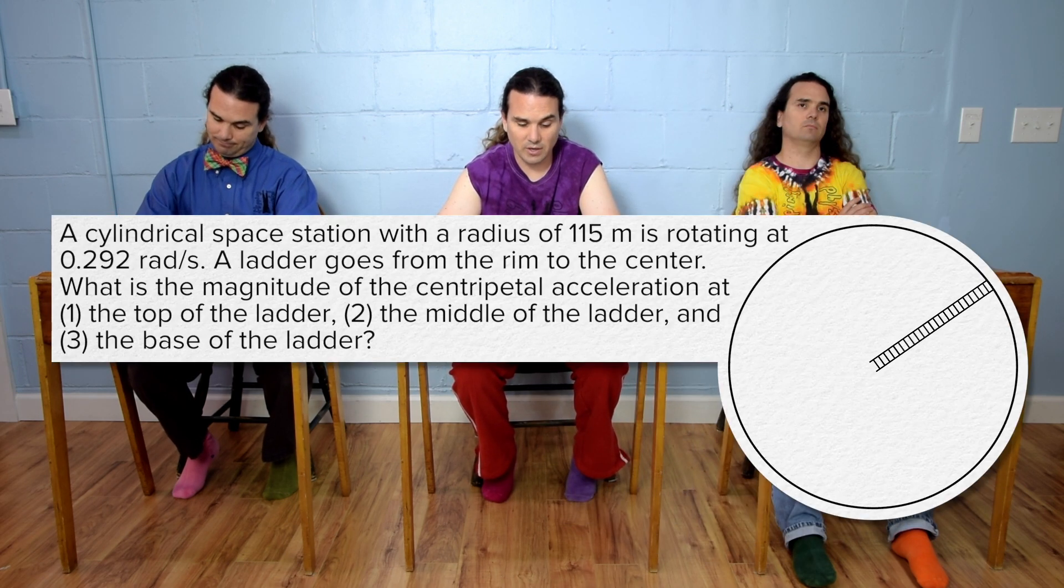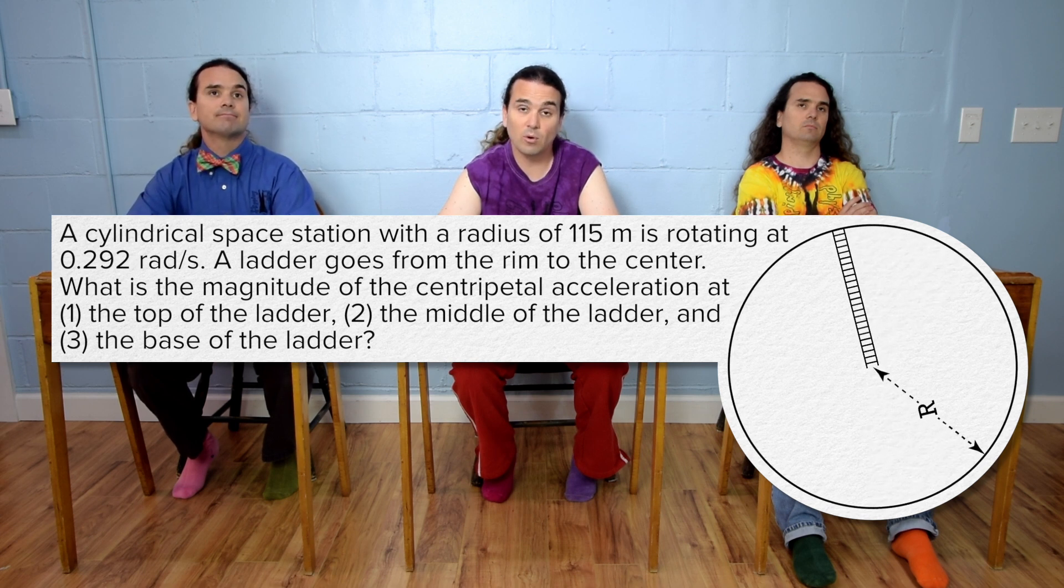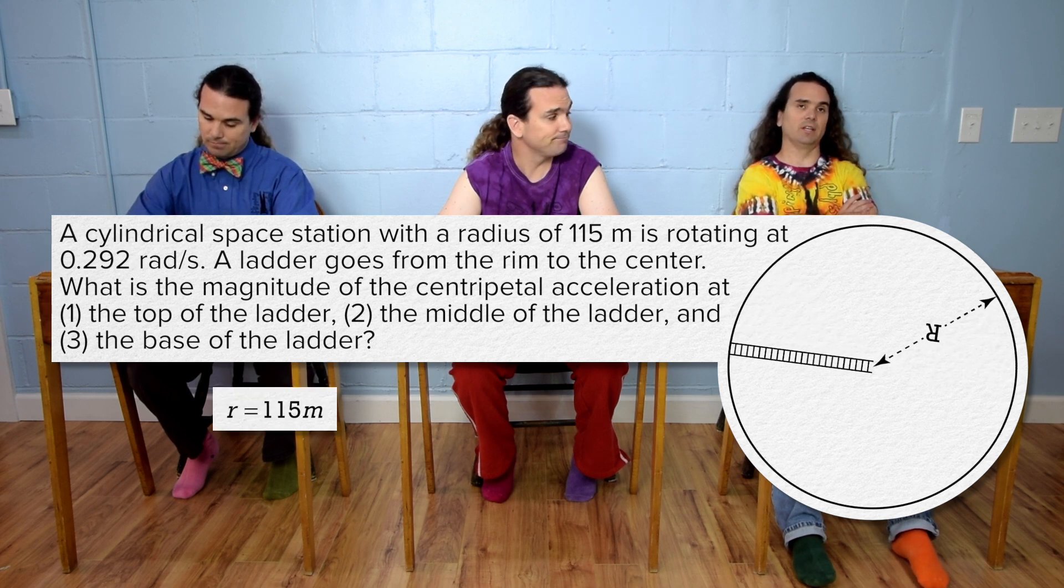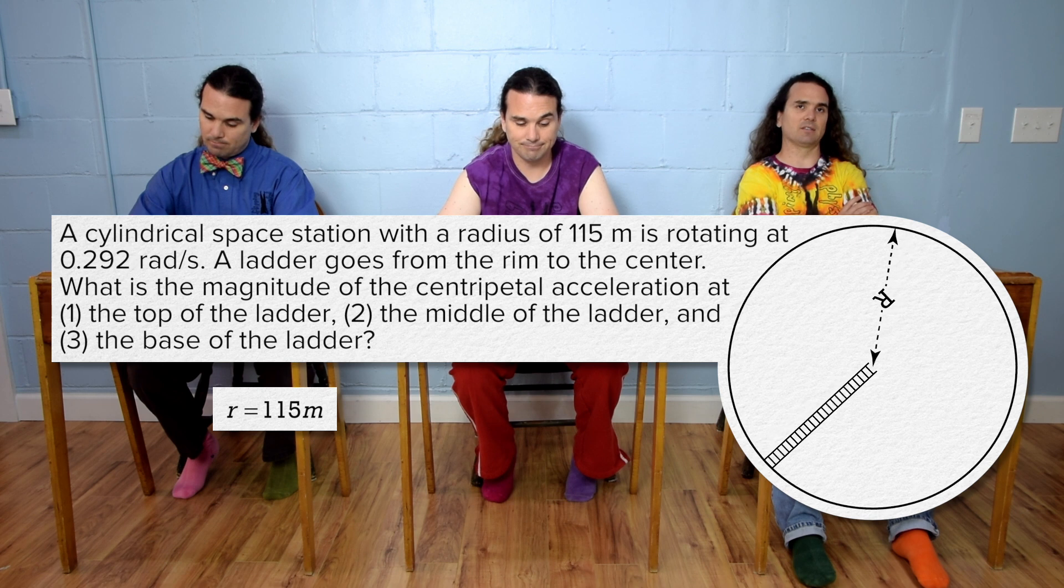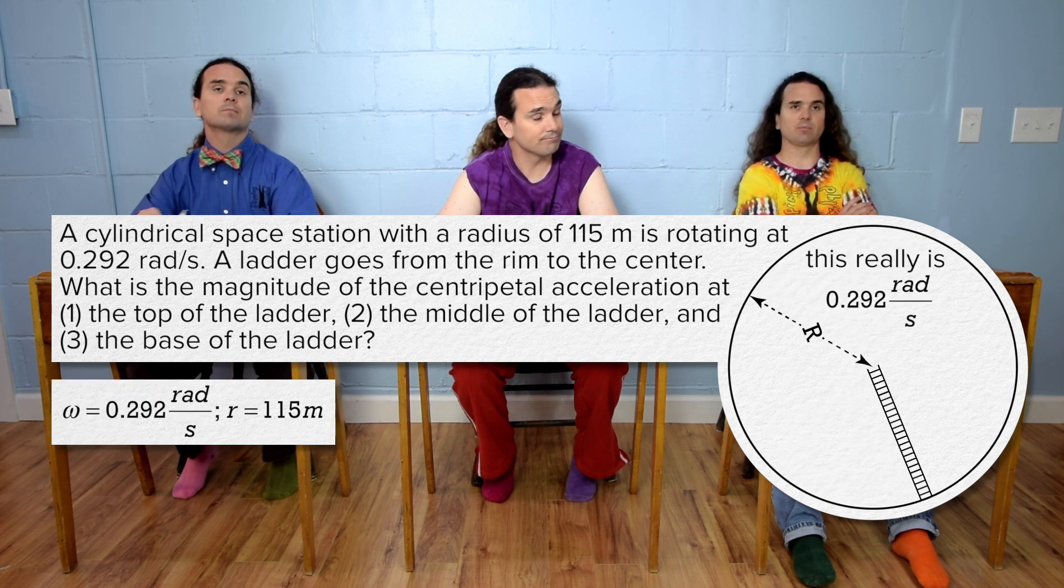A cylindrical space station with a radius of 115 meters is rotating at 0.292 radians per second. Stop. Radius equals 115 meters and angular velocity equals 0.292 radians per second.